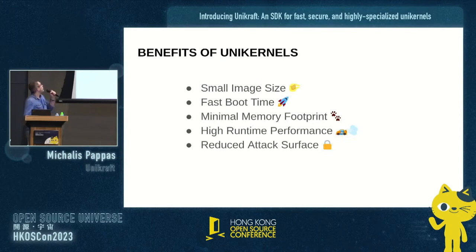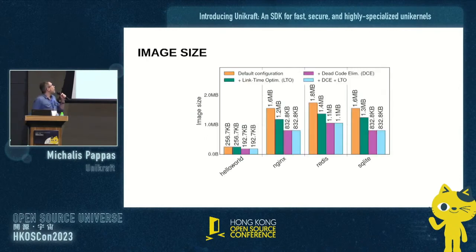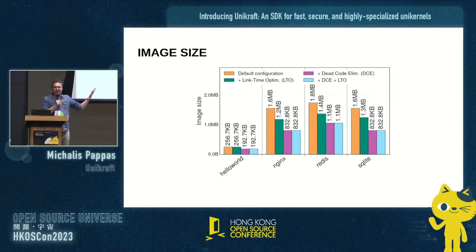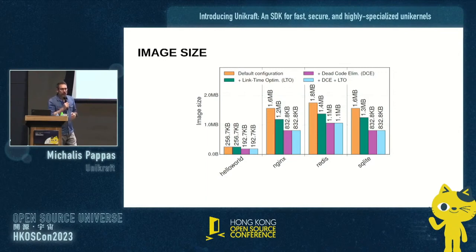When it comes to image size, you can see Unikraft compiled for different applications like Nginx, Redis, SQLite, and a simple hello world. The whole image with the kernel and the application gets as small as 1-point-something megabytes — less than 2 megabytes, which is pretty small. With additional optimizations like link-time optimization and dead code elimination, it can get even smaller.